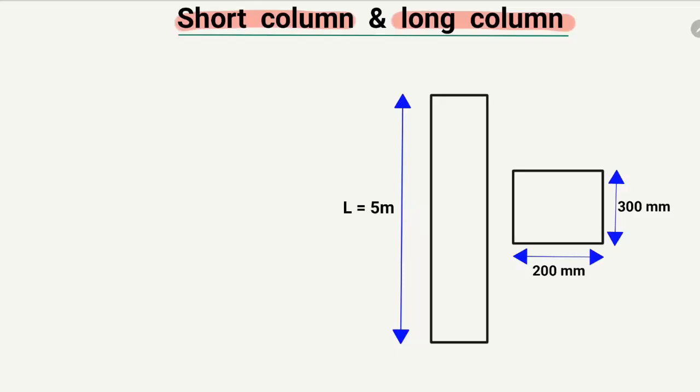We have a column here where the length of the column is 5 meters. Looking at the cross-section, the width of the column is 200 millimeters and the depth or height of the column is 300 millimeters. So this is the cross-section of the column: 200mm width and 300mm depth, with a length of 5 meters.